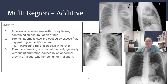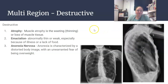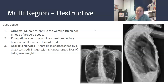For destructive pathologies, we have atrophy — the thinning or loss of muscle tissue. Emaciation is being abnormally thin or weak, especially because of illness or lack of food. Anorexia nervosa is characterized by a distorted body image, a fear of being overweight, and restricting or not wanting to eat.